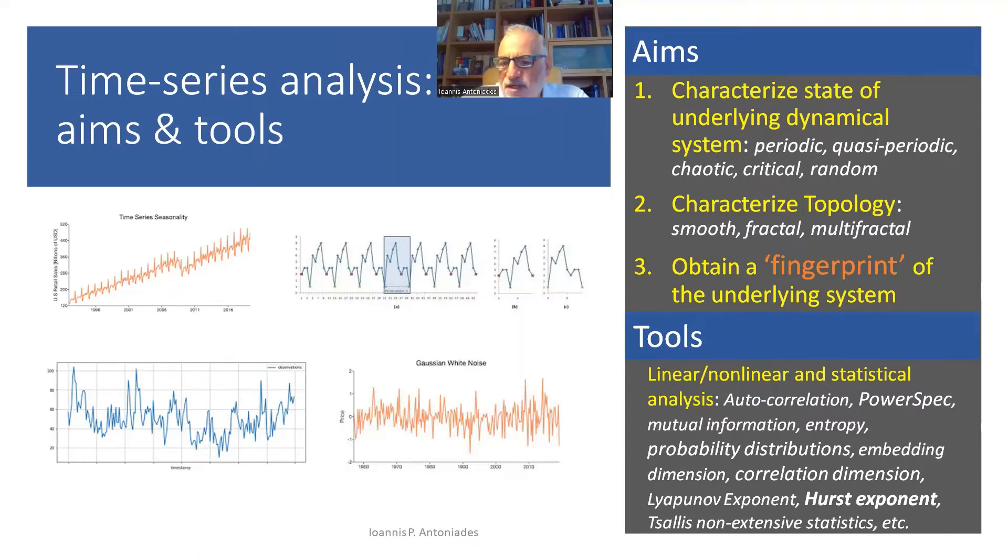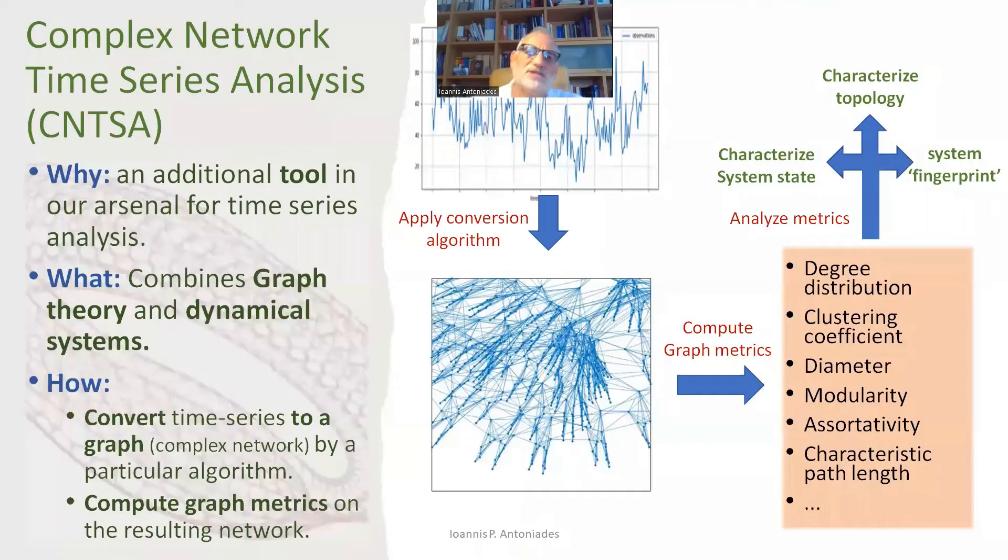What are some of the classical tools we have to achieve these goals? Well, there are very well-known tools from linear and non-linear analysis and statistical mechanics. You can calculate metrics like autocorrelation, power spectrum, probability distributions, embedding dimension, the Hurst exponent, the Lyapunov exponent, and so on. So there's a huge number of tools available out there to achieve these tasks. So where does complex network time series analysis come into that?